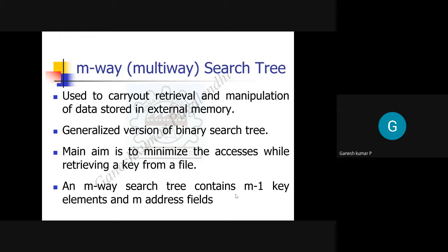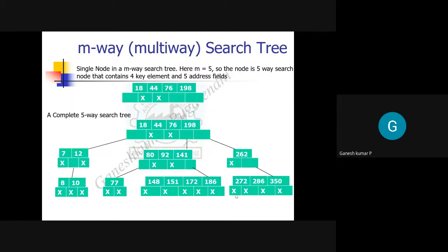The M-way Search Tree contains a node that holds m minus 1 key elements and m address fields. Key elements here refer to data. For example, if you store values one, two, three, four, five - in a binary search tree one would be at root, three as left child, etc. But in the M-way Search Tree, you may treat all those values as a single root node. That means a single node has m minus 1 key elements and m address fields.